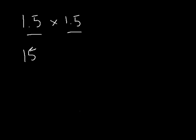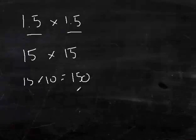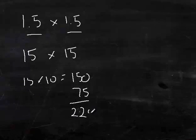Imagine that it's 15 times 15. We ignore the decimals for now. So that would just be 15 times 10 equals 150. Plus 15 times 5, which is 75, which equals 225.